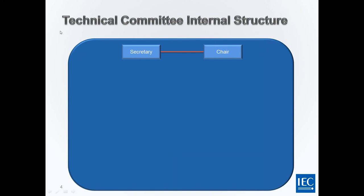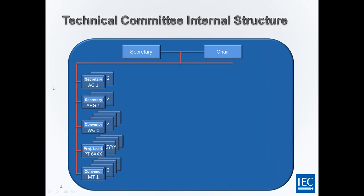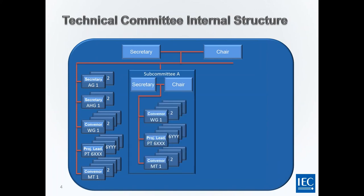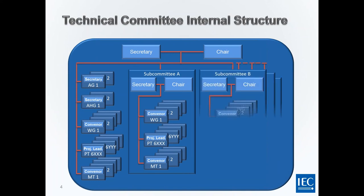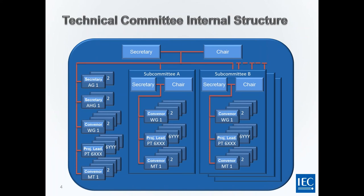Now some considerations about the global structure of a technical committee, to understand where working groups, project teams, and maintenance teams fit. In a technical committee, the chair and secretary operate the committee. As per the directives, a technical committee is managed by its P members, who vote on all standards and on decisions such as establishing subcommittees, working groups, and nominating people. The committee also has advisory groups, working groups, project teams, maintenance teams, and subcommittees with the same structure.